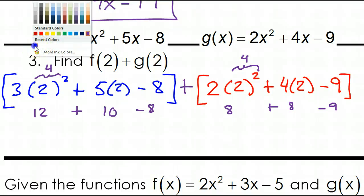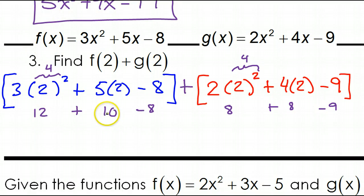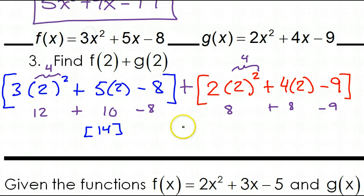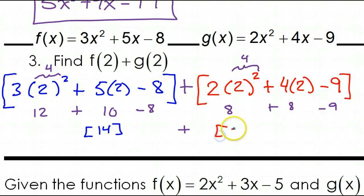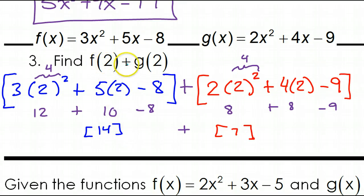So 12 plus 10 is 22, minus 8 is 14 — that means f at 2 is 14. And over here, 8 plus 8 is 16, minus 9 gives us 7 — so g at 2 is 7. We're supposed to take f of 2 and add it with g of 2: 14 plus 7 equals 21. So your final answer should be positive 21.